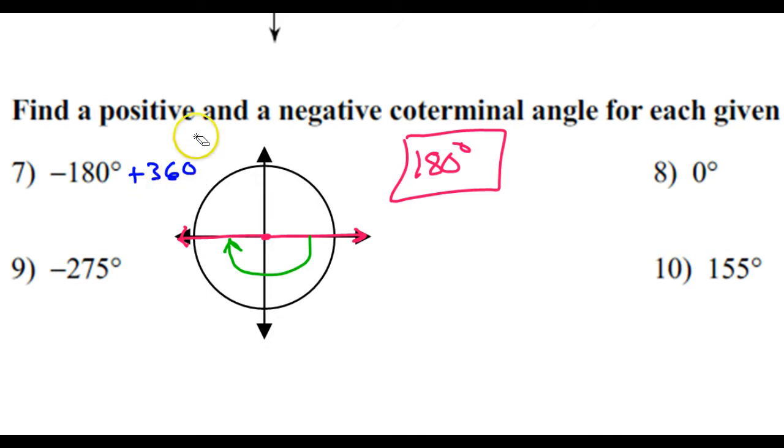Okay, now, if I want to get a negative coterminal angle, then I have to get even more negative. So I would take negative 180, and I would subtract 360, and that should do it.